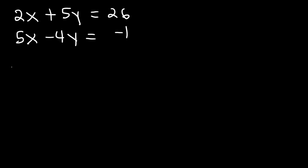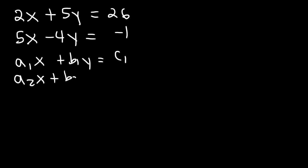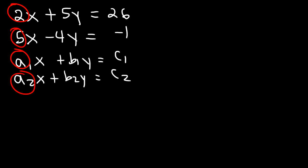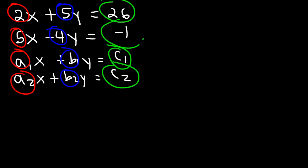This system is set up in the form a1x plus b1y equals c1, and a2x plus b2y equals c2. So a1 is 2, a2 is 5, b1 is 5, b2 is 4, c1 is 26, and c2 is negative 1.